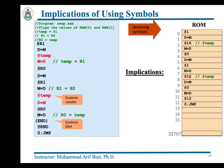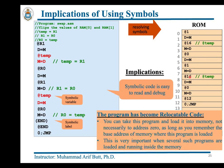There are two implications of using symbols in assembly programs. First, symbolic code is easier to read and debug. Second, the program becomes relocatable — since there are no hard-coded addresses, you can load the program at any address in RAM, not necessarily at address 0, as long as you remember the base address. Such programs are called relocatable programs or relocatable code.